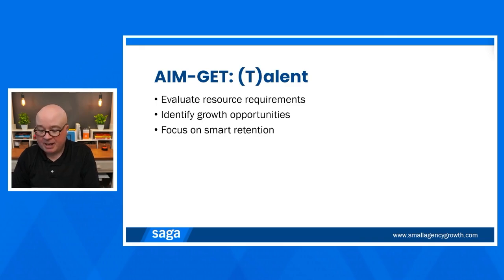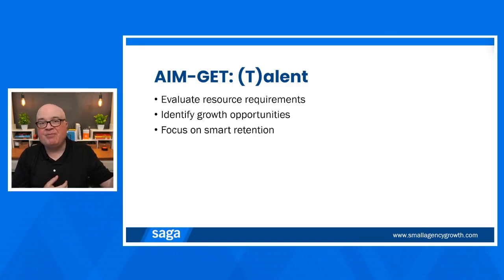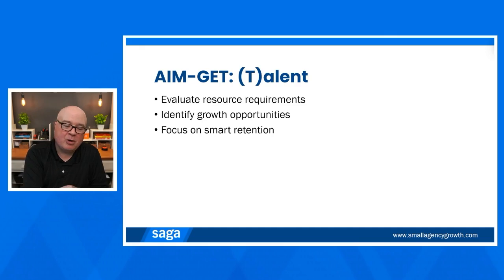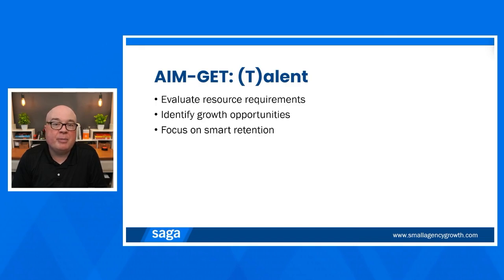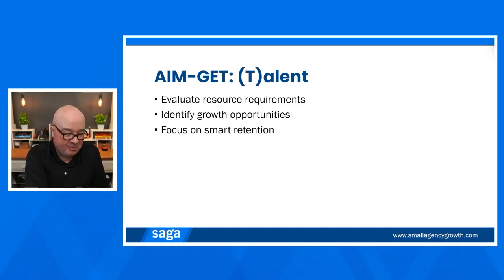If you need an additional person but don't have budget, backtrack through AIM-GET to find where adjustments are needed — new revenue sources or efficiency improvements that could fund the hire. While I encourage you to use AIM-GET on a linear basis to get started, you'll need to hopscotch around before arriving at your final plan. There will be places where an adjustment in one area requires re-reviewing something elsewhere. At the end, compare the whole plan against your personal ambition to make sure you're still aligned.